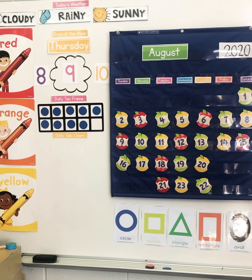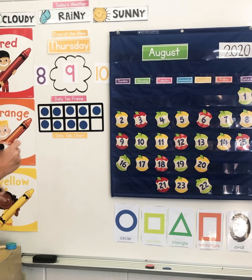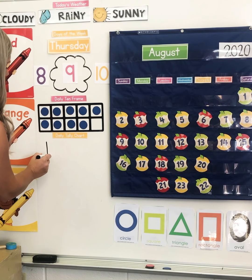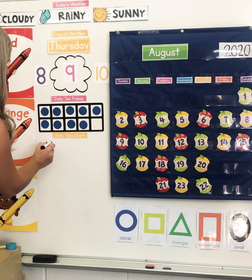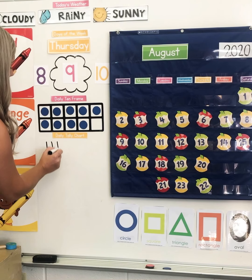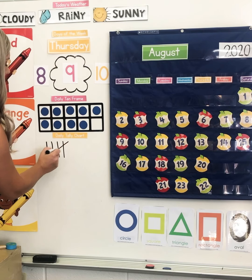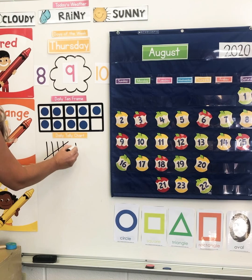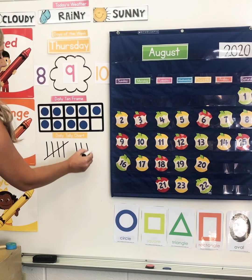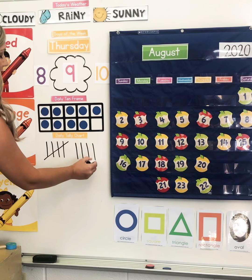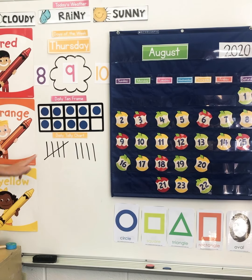I'm going to show 9 in another way. I'm going to show 9 with tallies. 1, 2, 3, 4, 5 across, 6, 7, 8, 9. This is what 9 looks like in tallies.